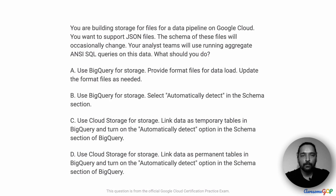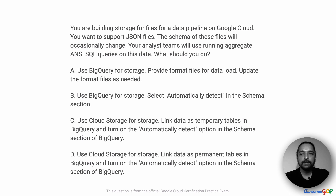In this project scenario, you are building storage for files for a data pipeline on Google Cloud. You want to support JSON files. The schema of these files will occasionally change. Your analyst teams will use running aggregate ANSI SQL queries on this data. What should you do?